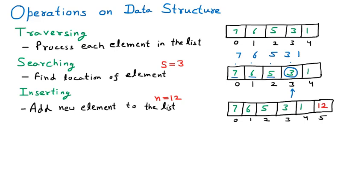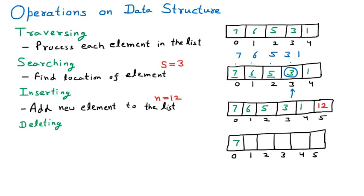The next operation on the data structure is called deletion or deleting. Deleting means we have a given array and we need to delete a certain element. In this array the numbers present are seven, six, five, three, one, and twelve. We are going to delete the number twelve. After deletion, that number is removed and the space is freed. Although we are deleting at the end here, deletion or insertion can be at any position depending on the program. Deleting means removing an element from the list.